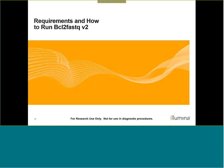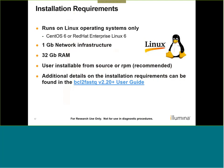Requirements and how to run BCL to FASTQ version 2. BCL to FASTQ is a Linux software, and we recommend installing on a CentOS 6 or Red Hat Enterprise Linux 6 operating system. It requires a one gigabit network infrastructure as well as 32 gigabytes of RAM, which is needed to read and write the large BCL files. BCL to FASTQ is user installable either from source or through the RPM installer, with the RPM installer recommended for most cases. More information can be found in the BCL to FASTQ 2.20 user guide.